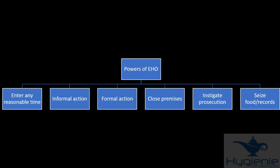What other powers do EHO have? They can enter the business any reasonable time, that's any time you're open. They can take informal actions such as verbal advice or letters. They can take formal actions such as improvement notices or emergency prohibition notices. They can close down the premises. They can instigate prosecution and they can seize food and records.